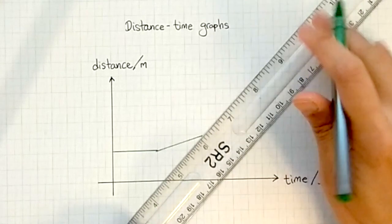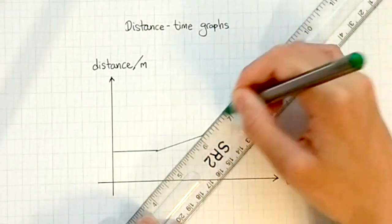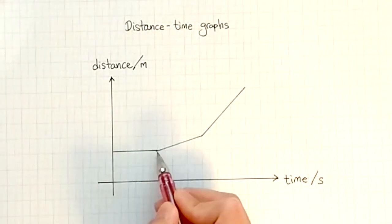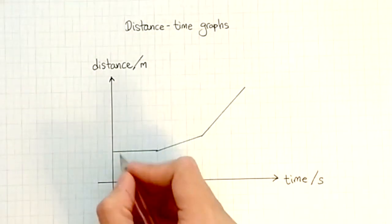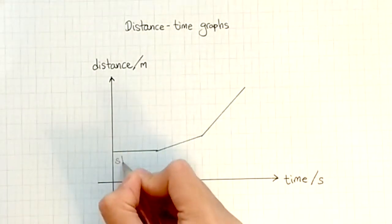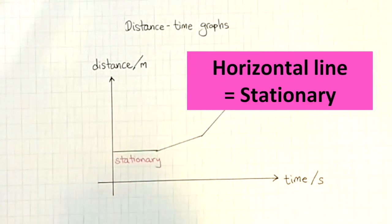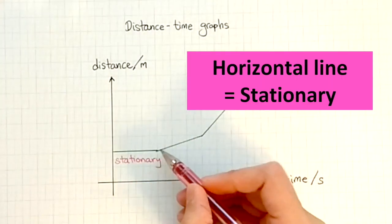On a distance-time graph, if we have a horizontal line, it represents an object that is stationary — the object is not moving.